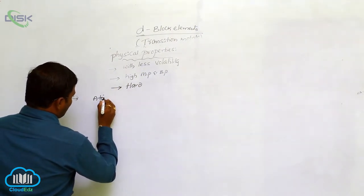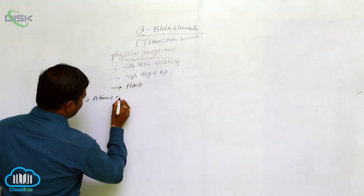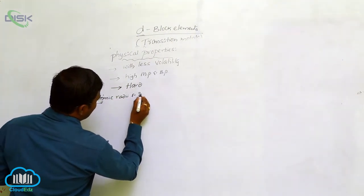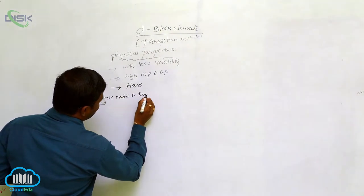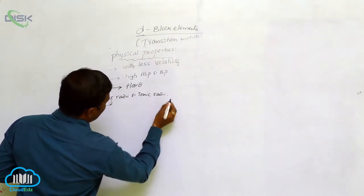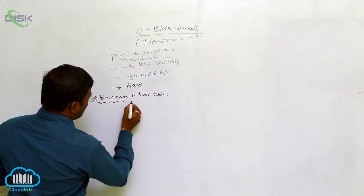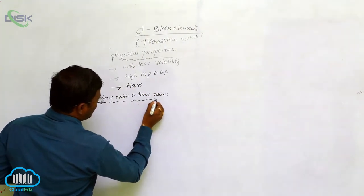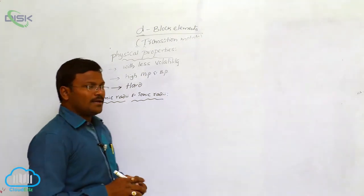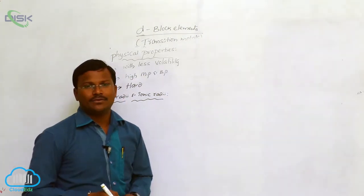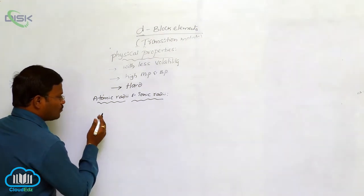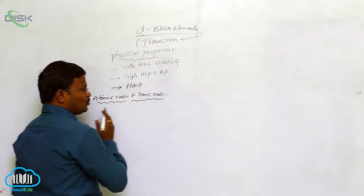Variation between atomic radii and ionic radii. In the general discussion of D-block elements, while we are moving from scandium to zinc — that means from the left side to the right side of the periodic table.